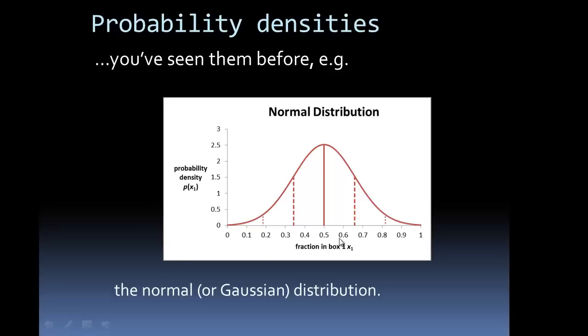Now the thing that you might not have talked about very much in high school is what this vertical axis actually is and that's the thing we're going to talk about how to calculate today which is the probability density.